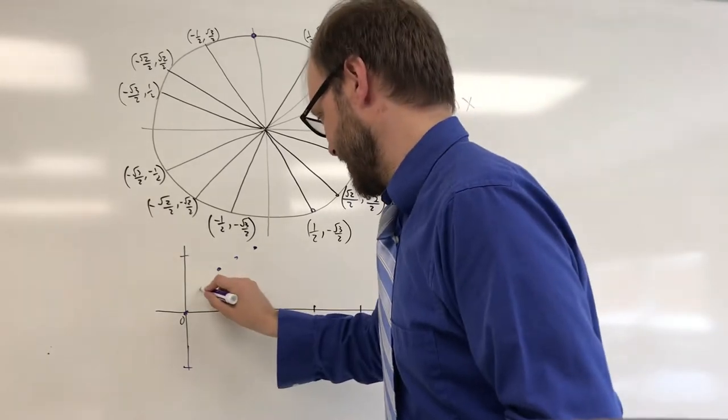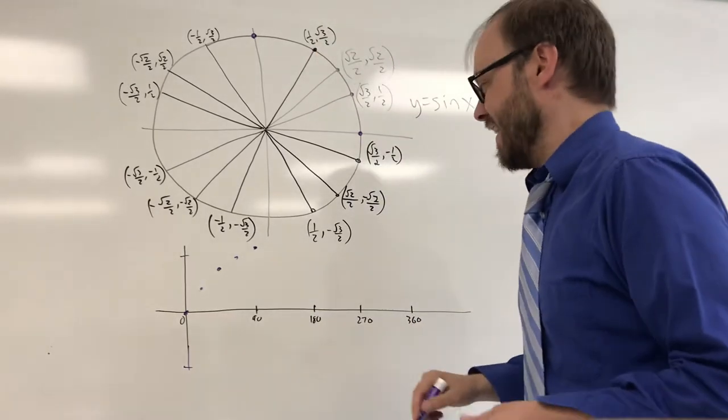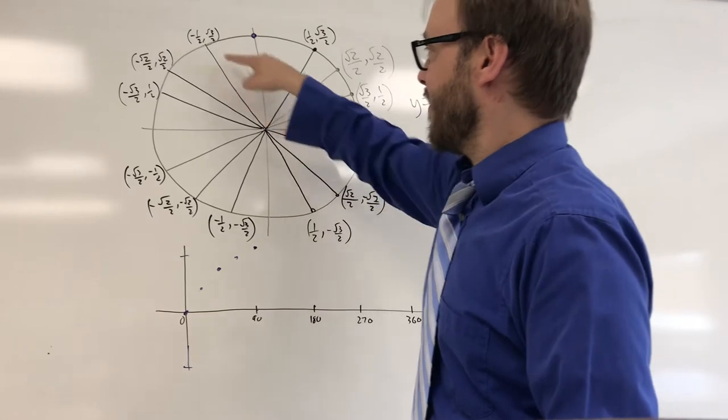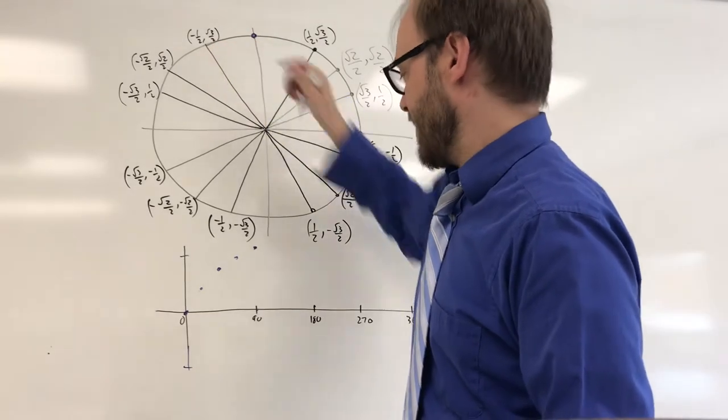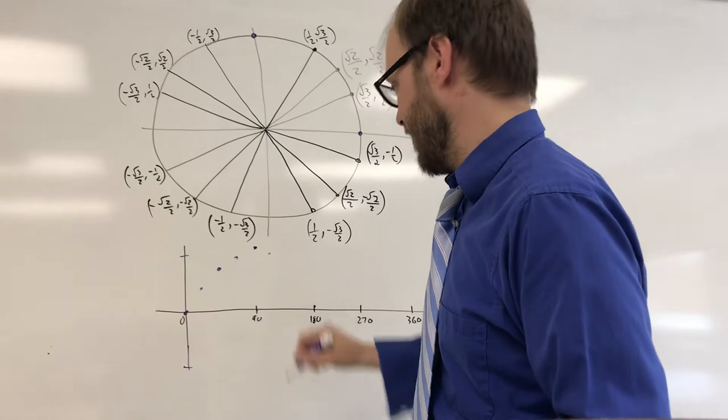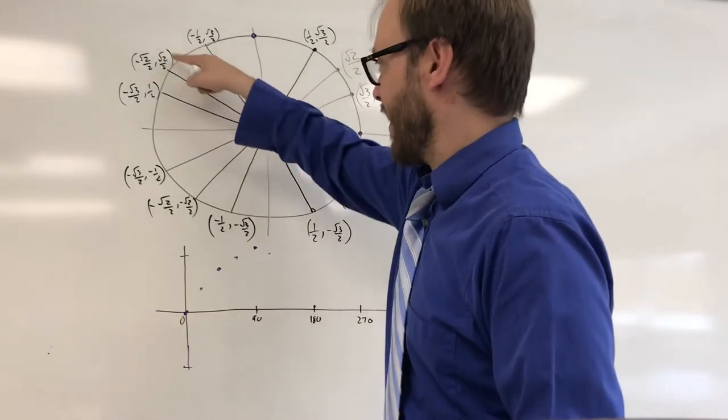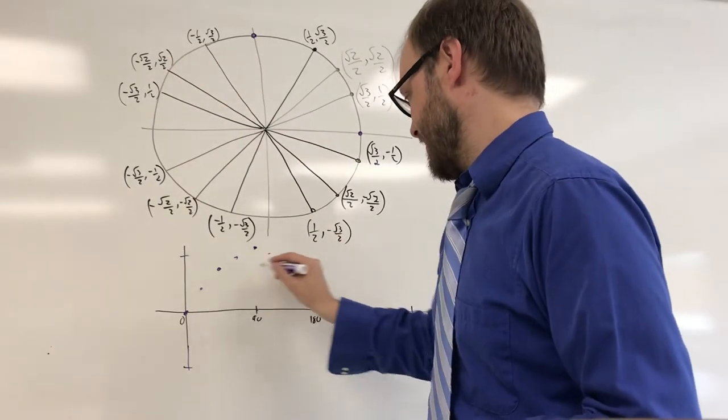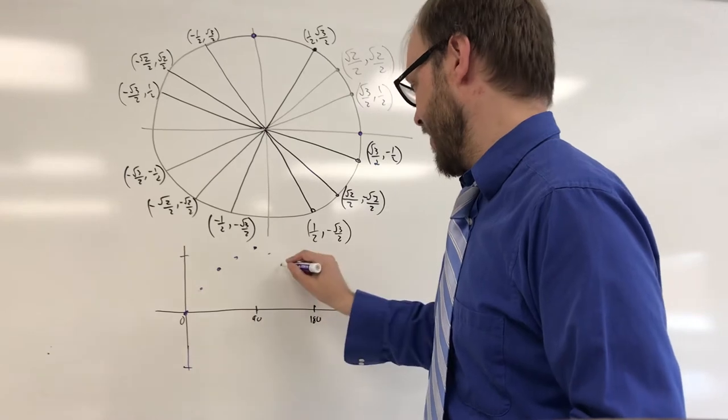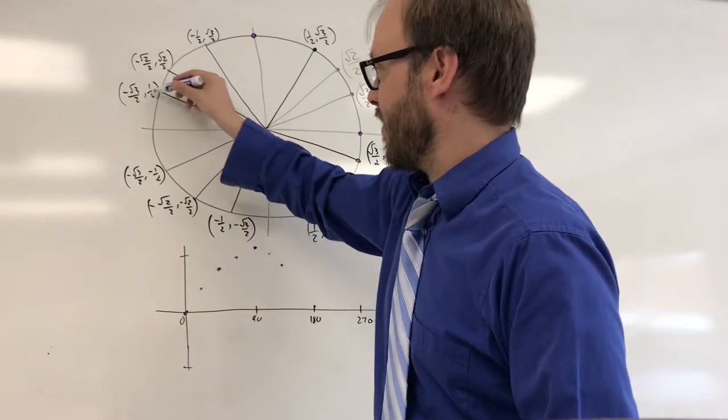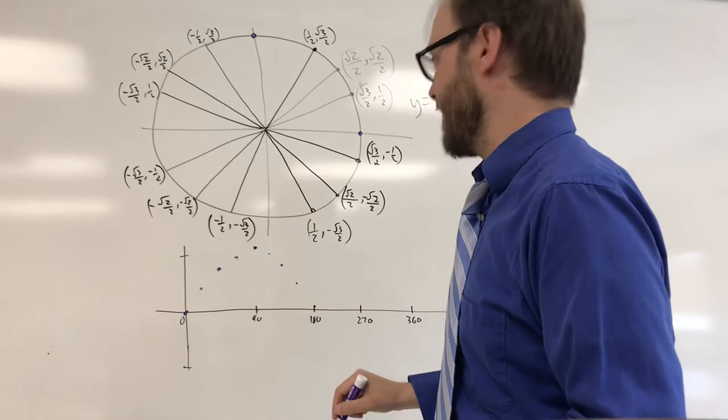It's not perfectly plotted, but anyway, then you go over here and the y-coordinate for 120-degree angle is radical 3 over 2, and it's going to mirror that point right there. And then the y-coordinate is radical 2 over 2, and it's going to mirror that point right there. And then you get a y-coordinate of one-half, and it's going to mirror that point right there.